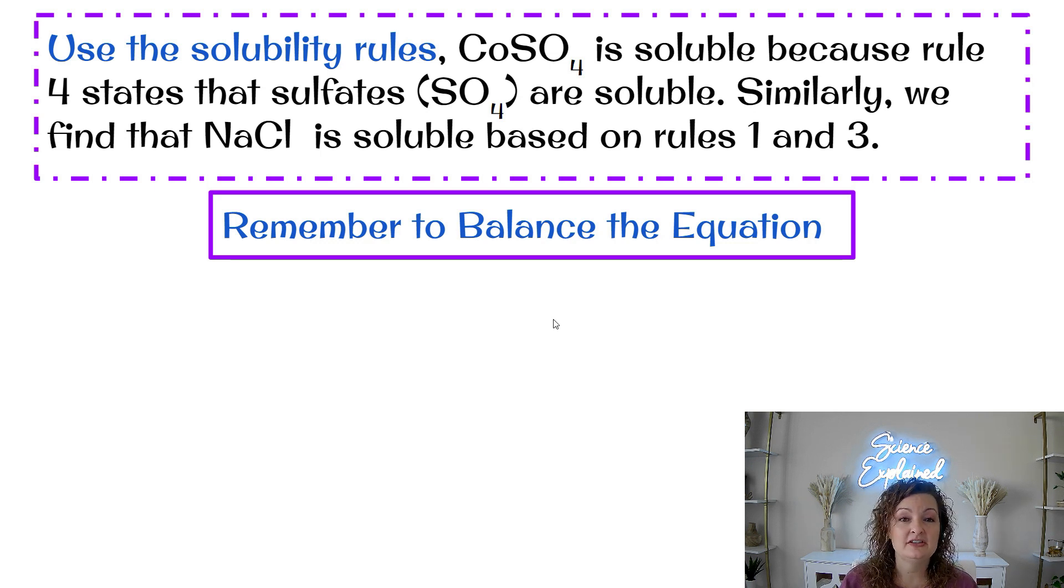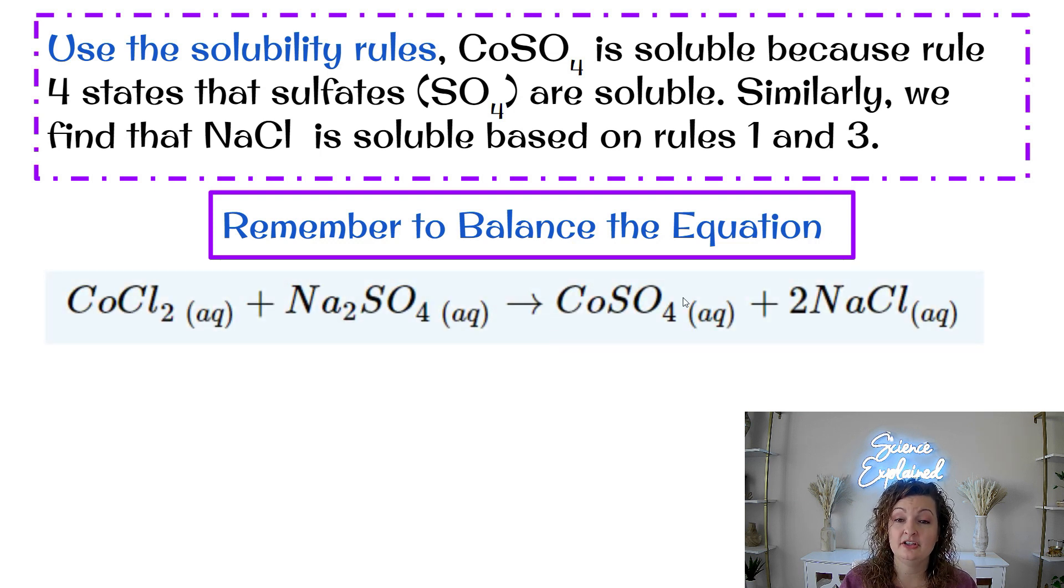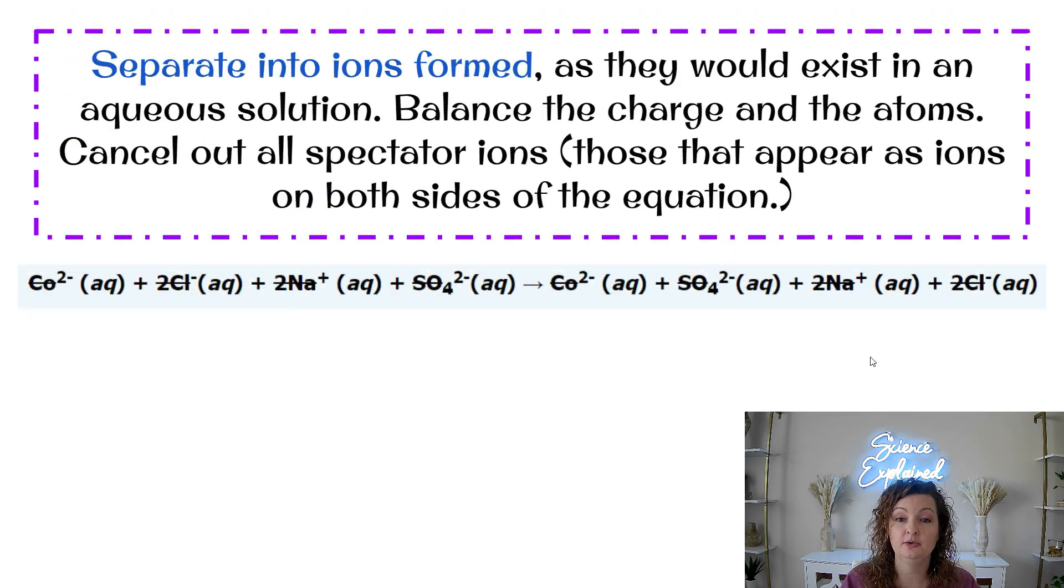So in this case, CoSO4 is soluble because rule 4 states that sulfates, which it contains, are soluble. Similarly, we find that NaCl is soluble based on rules 1 and 3. So in this case, they're both going to dissolve. They're both soluble. So we're going to go ahead, balance our chemical equation, add that AQ for aqueous for both of them since they will both be dissolving and are both soluble.